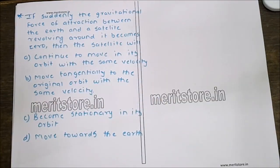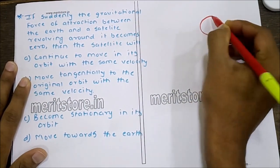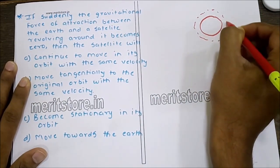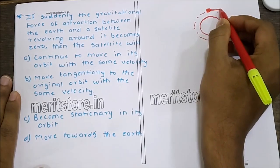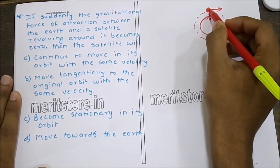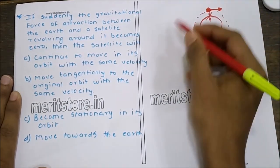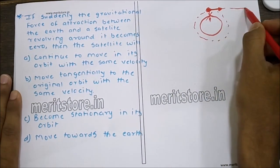If suddenly the gravitational force between the Earth and a satellite revolving around it becomes zero, what will happen to the satellite? The four options are: continue in orbit with same velocity, move tangentially with same velocity, become stationary, or move towards Earth. Since the satellite is orbiting under tangential velocity and gravitational pull, when gravity becomes zero the only remaining velocity is tangential, so it moves tangentially with the same velocity. Hence option B is the correct answer.